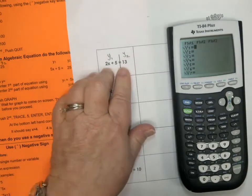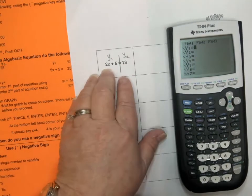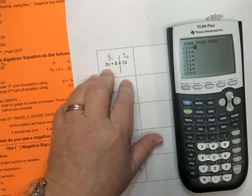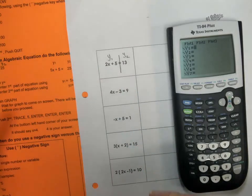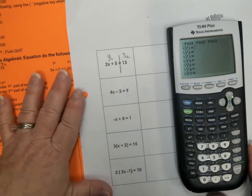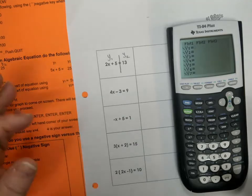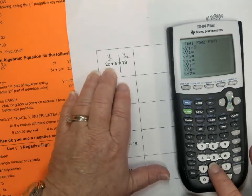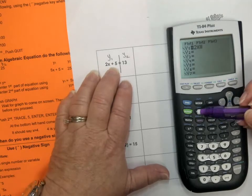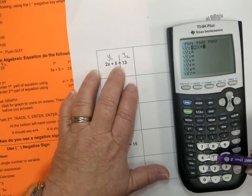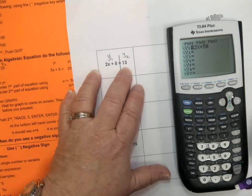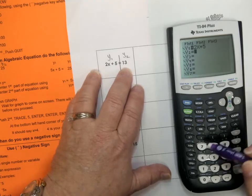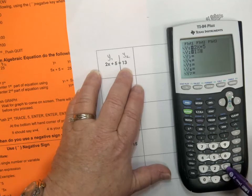Now, it doesn't matter what side you put in first, but I just like you to build a consistency and put the left side in under Y1 and the right side under Y2. But it will work the same if you mixed them up. 2, and then remember your X and plus 5. And then we're going down to Y2, and we're going to press 13.